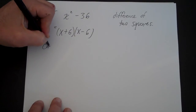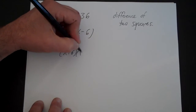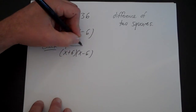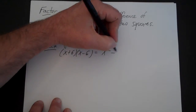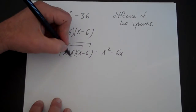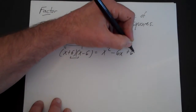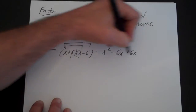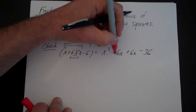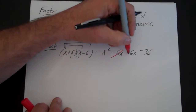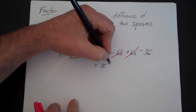If we want to check our work, we can. Let's FOIL x plus 6 times x minus 6: x times x is x squared, x times minus 6 is minus 6x, 6 times x is plus 6x, and 6 times minus 6 is minus 36. Since we have minus 6x and plus 6x, they cancel each other out and you get x squared minus 36.